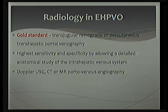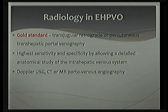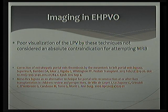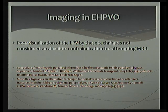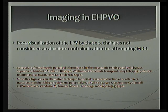The gold standard radiological investigation is transdicular portovenography, but due to its invasive nature it is not routinely performed; routinely we employ color Doppler ultrasonogram, CT, and MR angiogram. Studies show MR angiogram or CT angiogram are not 100% sensitive or specific in identifying the intrahepatic portal tree, especially when planning a rex shunt. Poor visualization of the left portal vein by these techniques is not taken as a contraindication for an attempted rex shunt, so ideally an intraoperative transdicular portovenography should be performed to assess whether the left portal vein is patent.